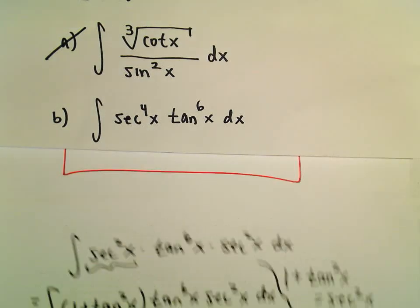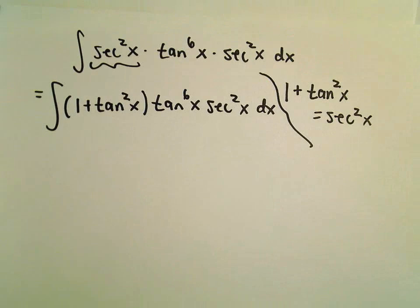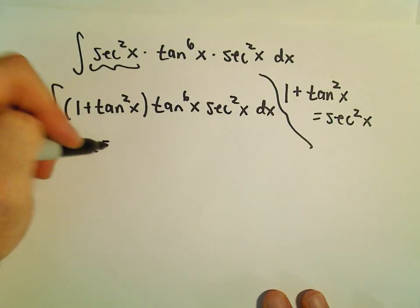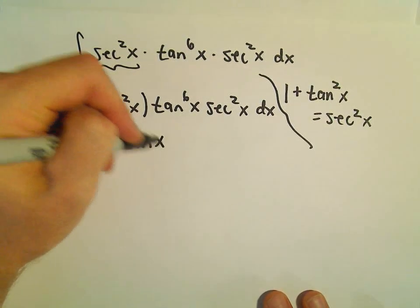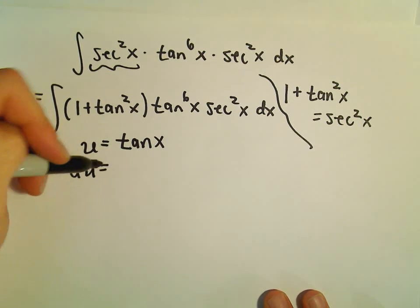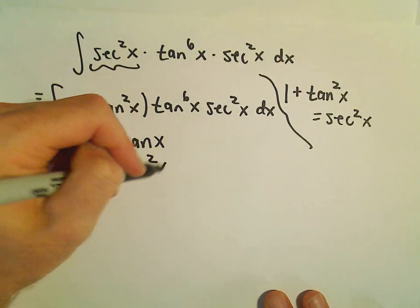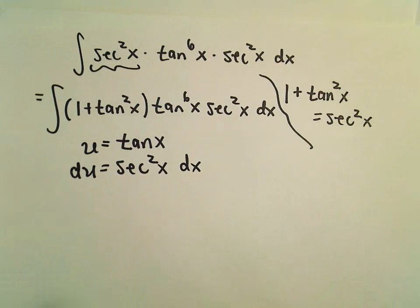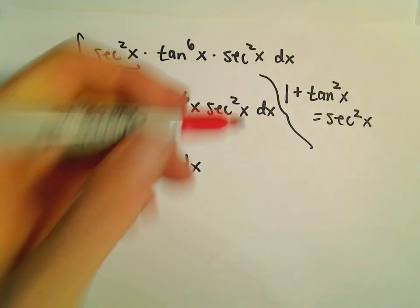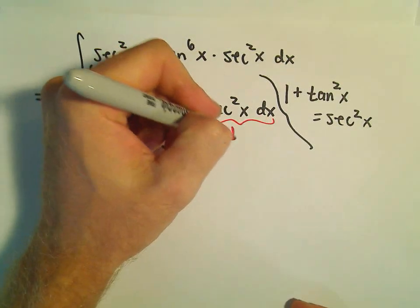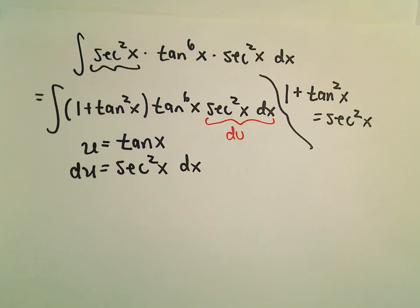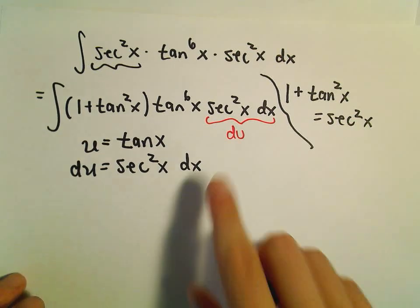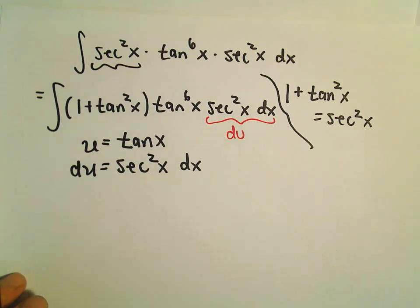And now this is where we can do our u-substitution again. So I'm going to let u equal tangent of x. Our du will be secant squared x dx. So our du is going to get taken care of by the secant squared x dx.